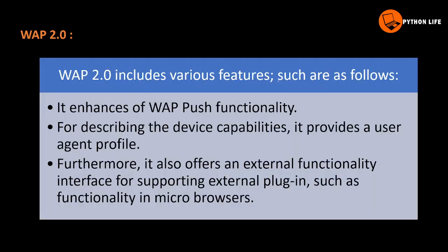WAP 2.0 includes various features. It enhances WAP push functionality. For describing device capabilities, it provides a user agent profile, showing connected devices, internet connections, protocols, data, and different versions. It also offers an external functionality interface for supporting external plugins such as functionality in micro browsers.